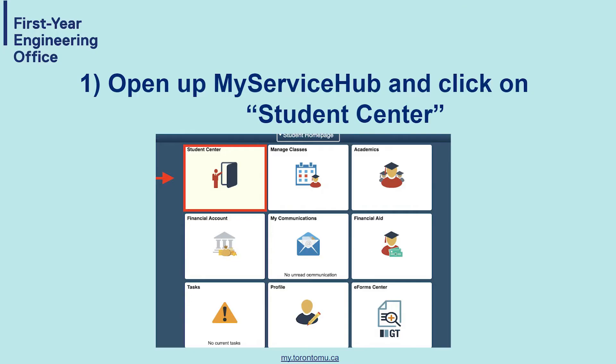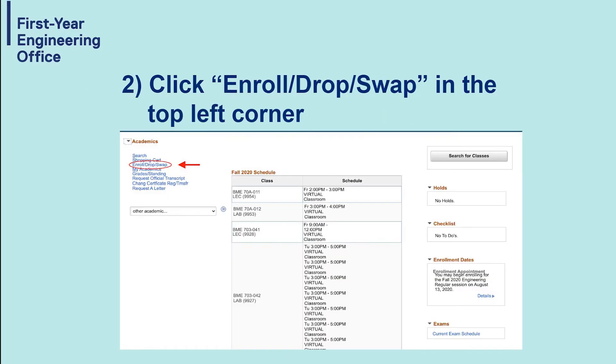Your first step is to open My Service Hub and click on Student Center. Then click on Enroll, Drop, Swap in the top left corner of your screen.